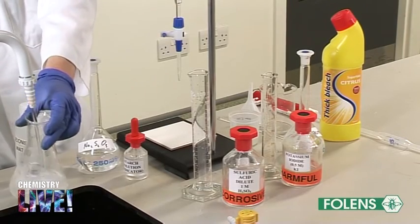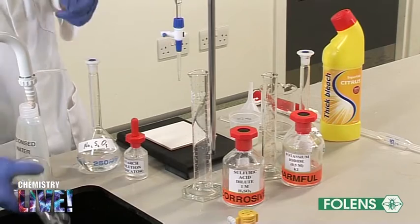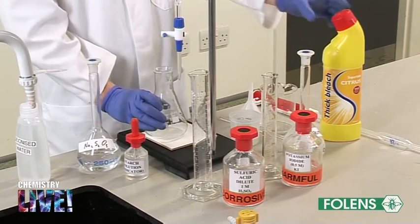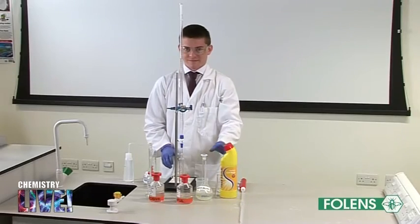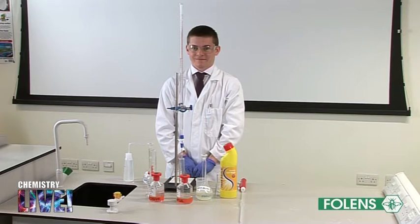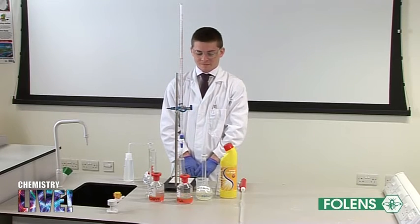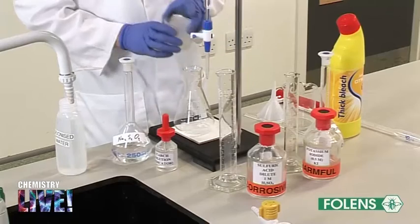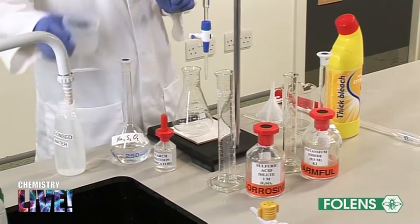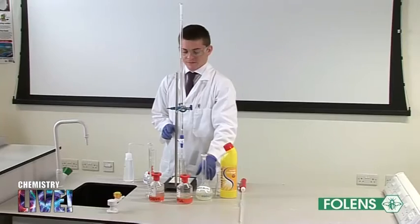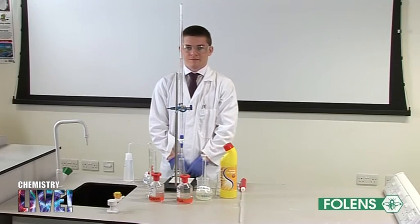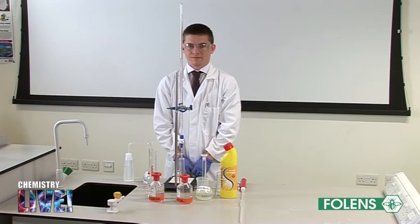The method of calculating the amount of sodium hypochlorite in the bleach is shown in your textbooks. Using the titration figures that you yourself have obtained, calculate the exact concentration of the sodium hypochlorite in the household bleach. The method of calculation is shown in your textbook. This concludes the experiment.